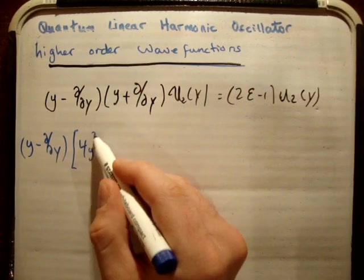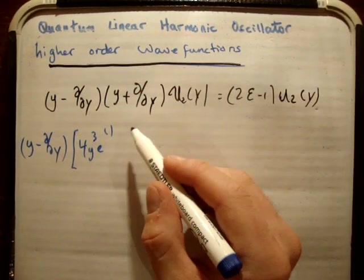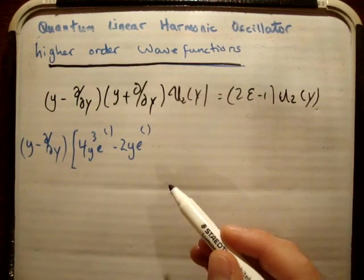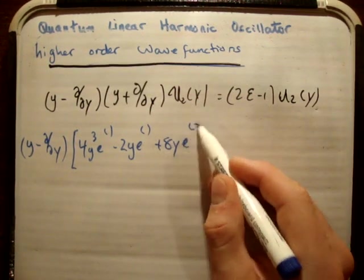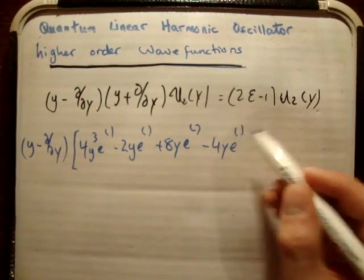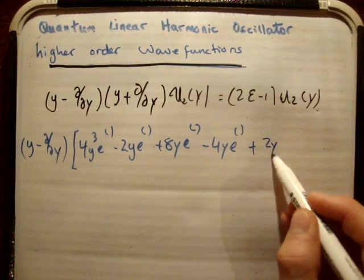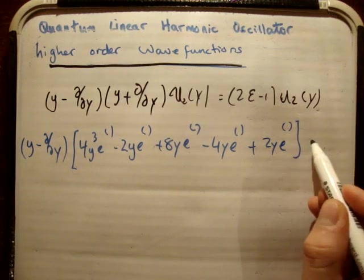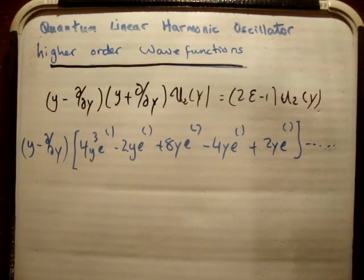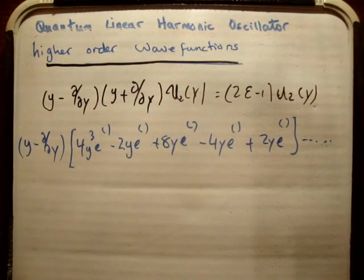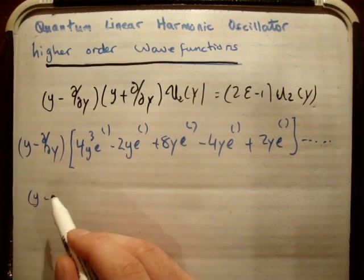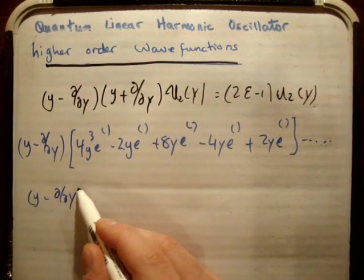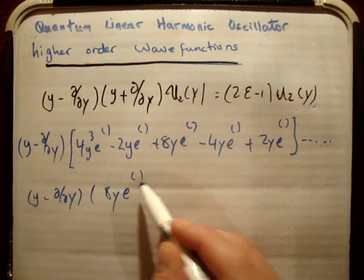We're going to have 4y cubed e to minus y squared over 2 minus 2y times the exponential, plus 8y times your exponential minus 4y cubed times your exponential plus 2y times your exponential. Now you just need to be careful with your product rules. But provided you do that pretty carefully, you'll be just fine. So then we apply, that basically turns out to be y minus d/dy, because everything cancels on 8y times e to minus y squared over 2.